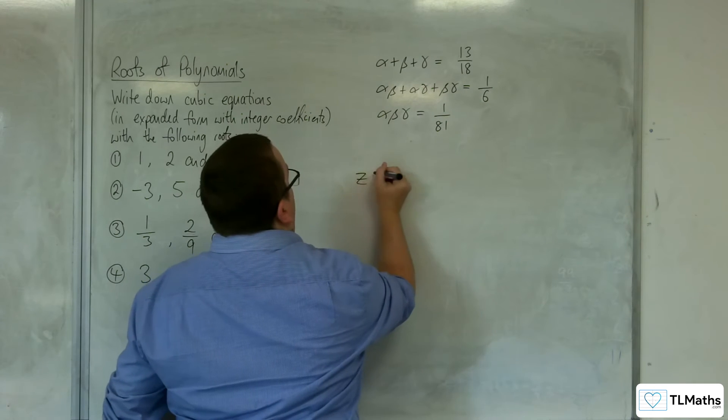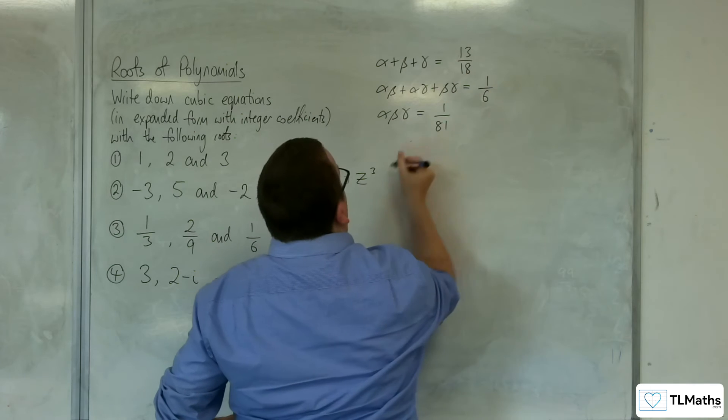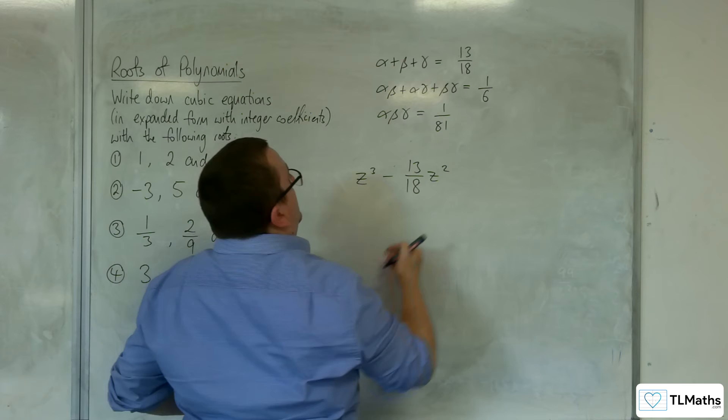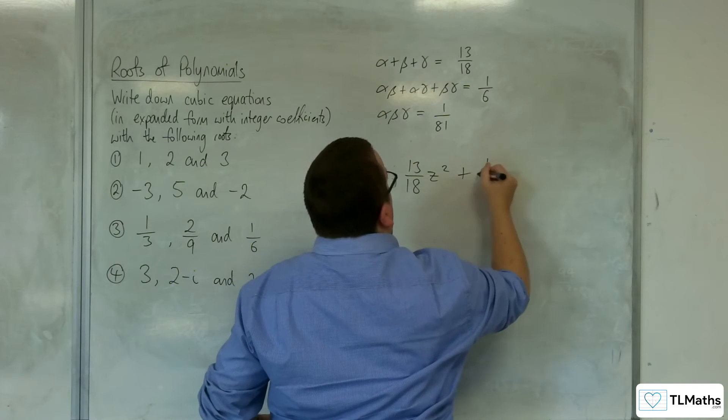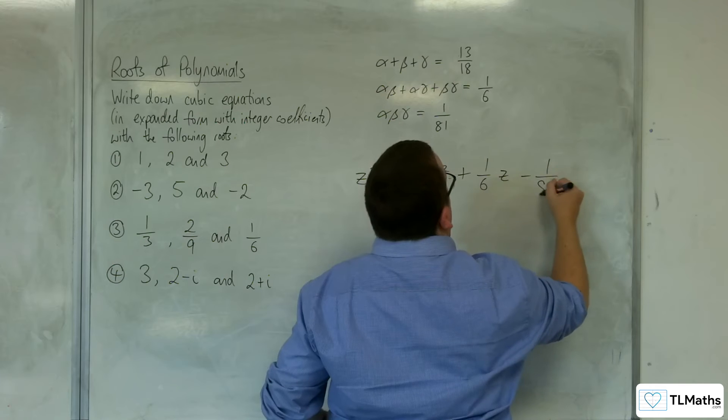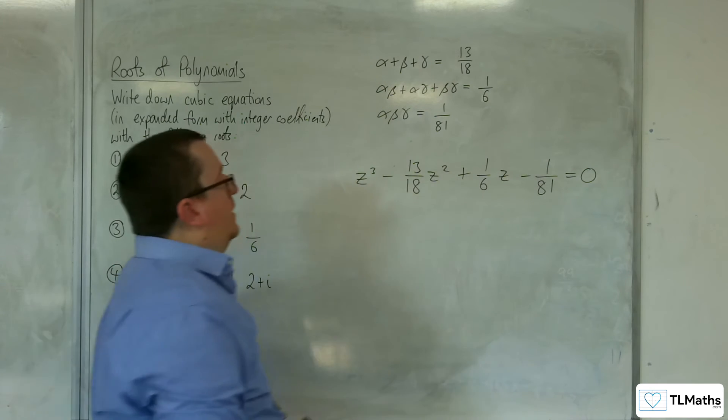So we'll have z cubed, take away 13/18 z squared, plus 1/6 z, take away 1 over 81, equals 0.